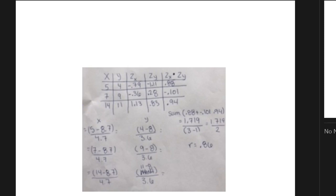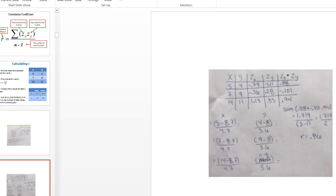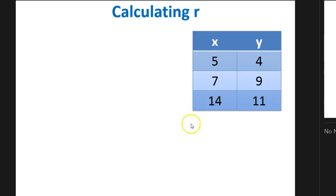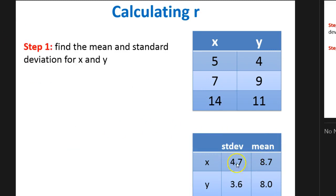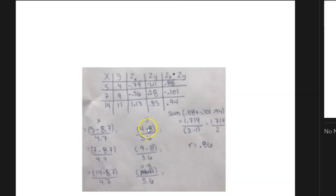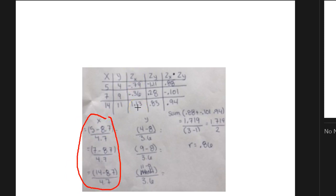Where does 8.7 come from? That was my mean from the original data. And 4.7 is my standard deviation for x. For y, I'll use 8 for the mean and 3.6 for the standard deviation. I've done my mean and standard deviation and used that to find the z-scores for all my x's — putting all those values in the chart — and did the same for all my y's.